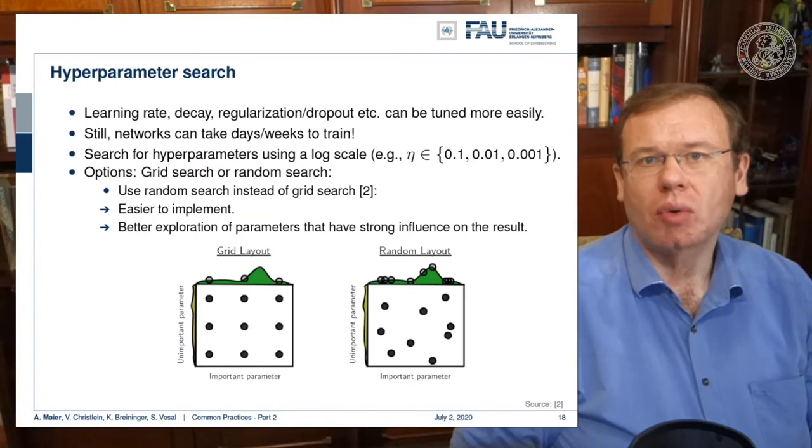Next, you want to do your hyperparameter search. Learning rate, decay, regularization, dropout, and so on—these have to be tuned. Still, the networks can take days or weeks to train, and you have to search for these hyperparameters. Hence, we recommend using a log scale, for example: 0.1, 0.01, and 0.001.